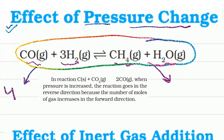In this reaction, the total number of gaseous reactants is 4 (three H₂ + one CO), and the products are 2 (one CH₄ + one H₂O). If pressure increases when the reaction is already at equilibrium, the equilibrium is disturbed. The system will try to neutralize this disturbance.